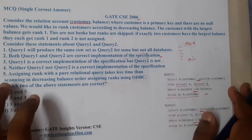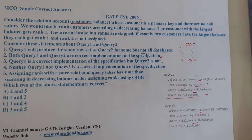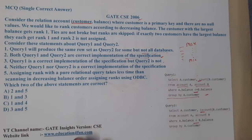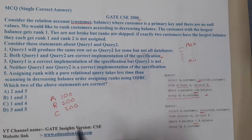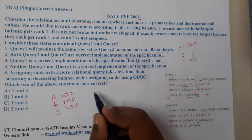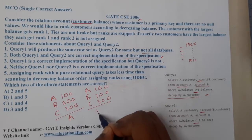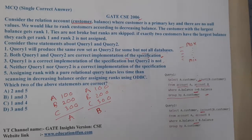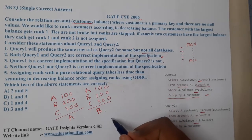To test whether both queries give the same result, let us take a small example. Assume customer names are A, B, C with balances 100, 200, 300. We duplicate the table as table A and table B, then perform a Cartesian product between them. We select a.customer_name and count of b.customer_name.